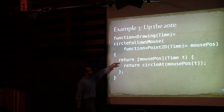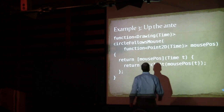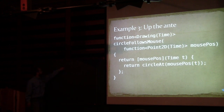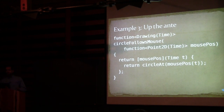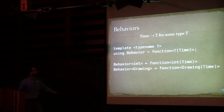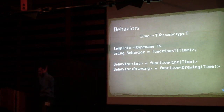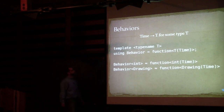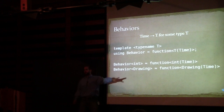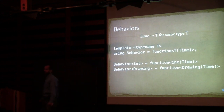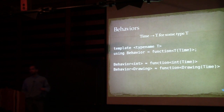We see a commonality — the mouse position is a function of time, and the result is a function of time. We had this idea with time functions. Maybe we should make this an abstract data type — the idea of a function of time — and we will. We'll call this Behavior. A behavior is a function from time to some type T.